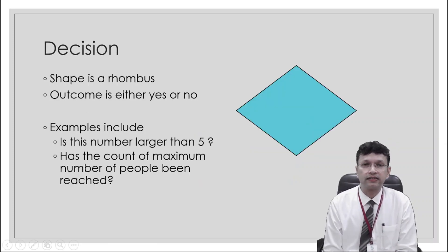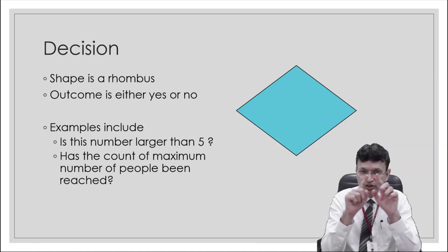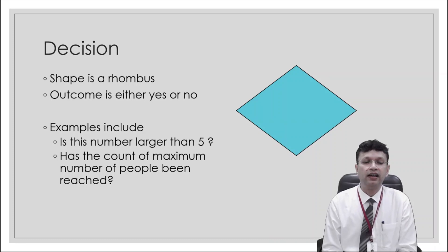Finally, decisions. The decision, this shape is rhombus or a diamond shape which we commonly call it. And the outcome is either yes or no. Examples, it can be like, is the number larger than 5? It can be yes or no. Has the count of maximum number of people reached? Yes or no. So answers can be in either yes or no.